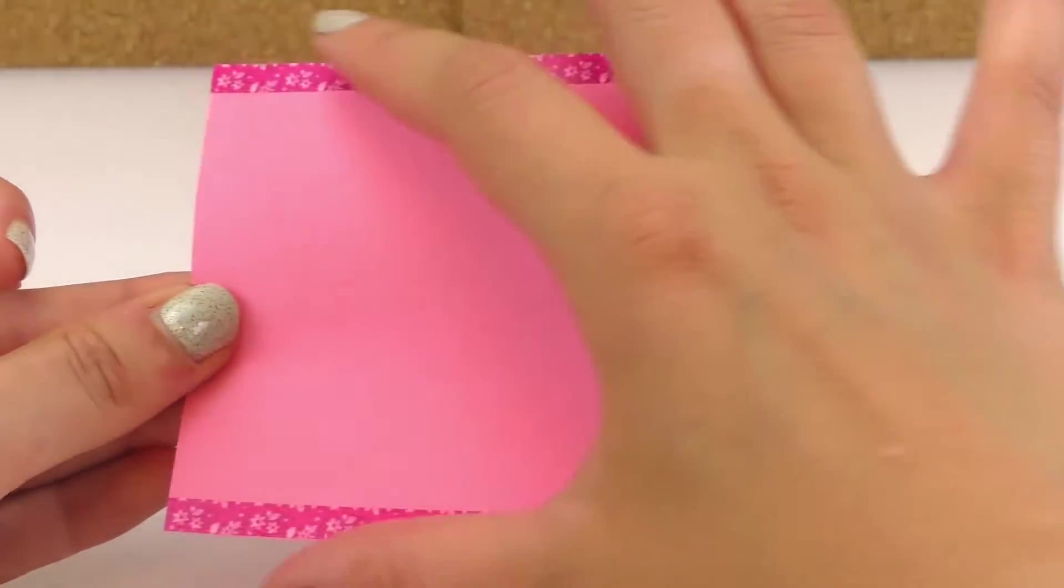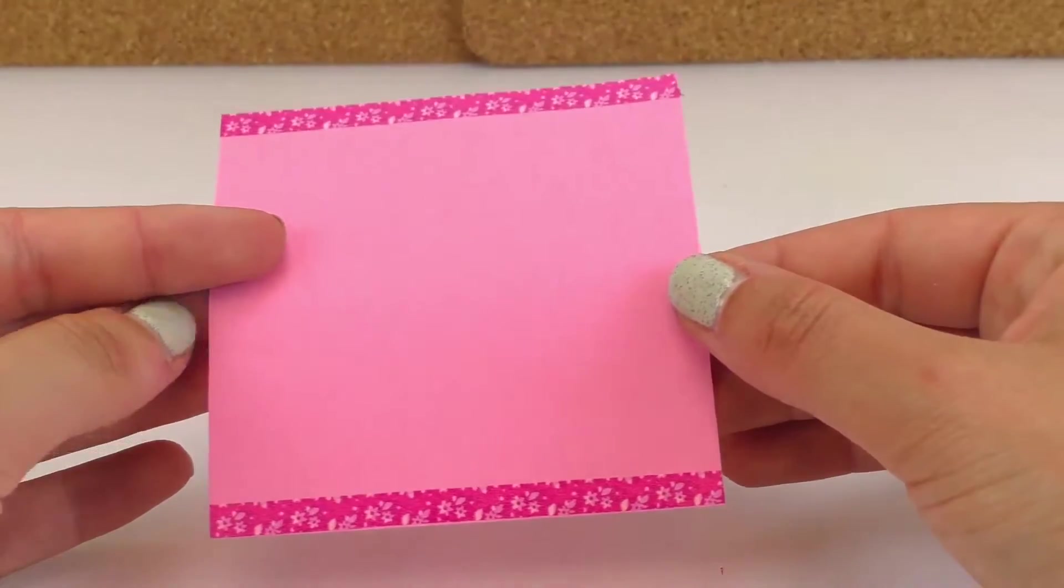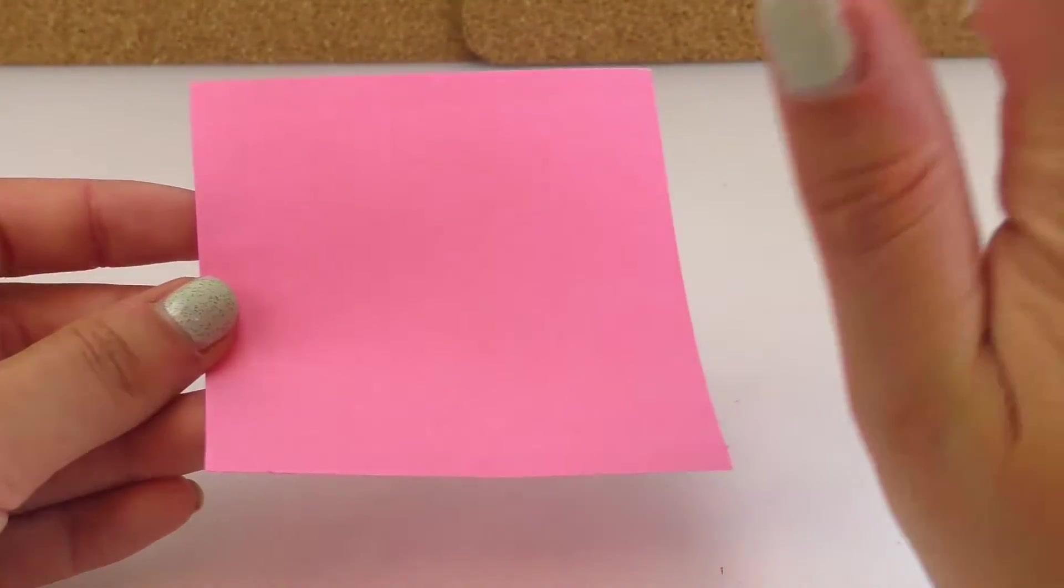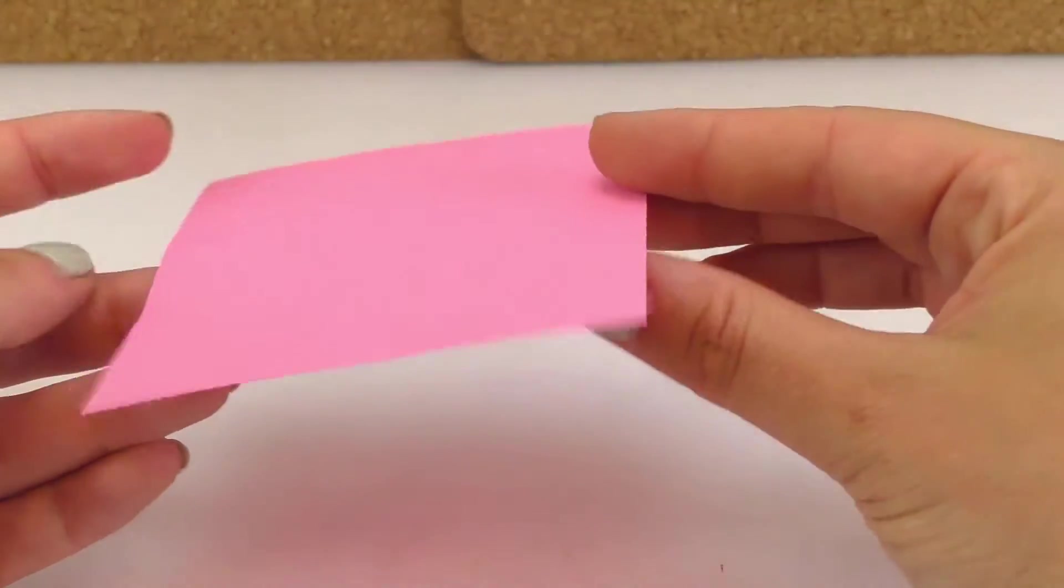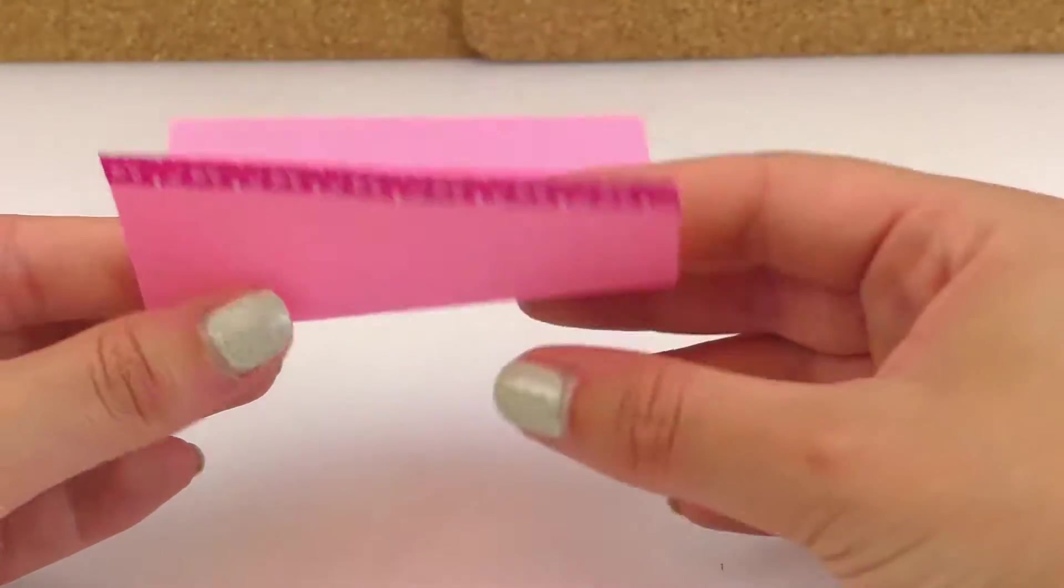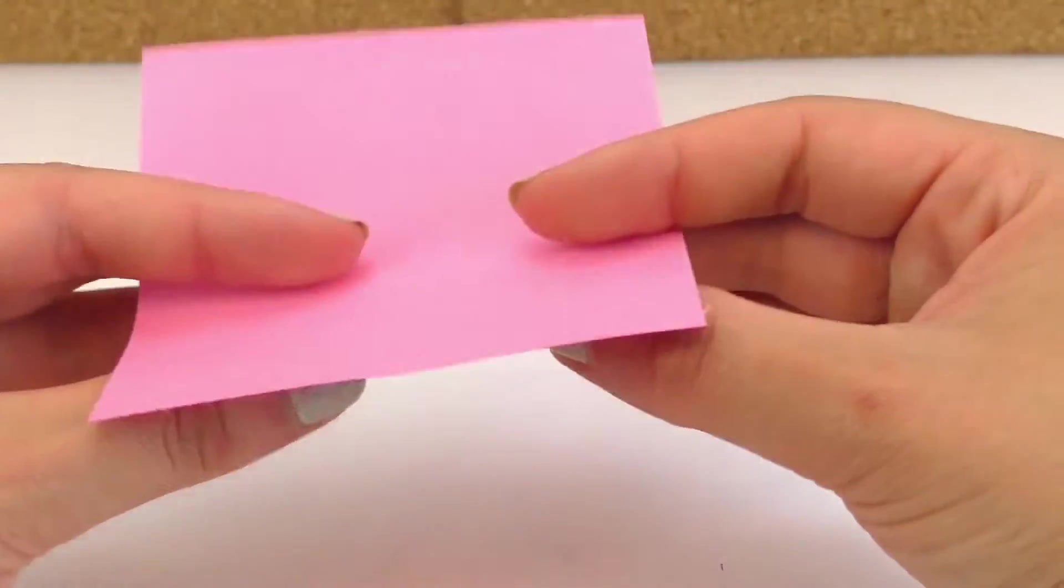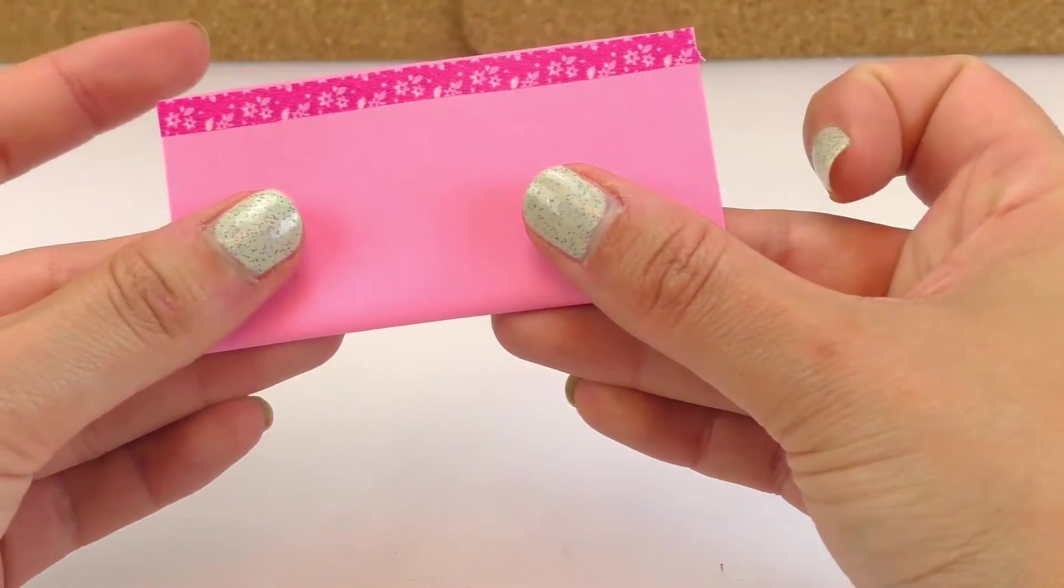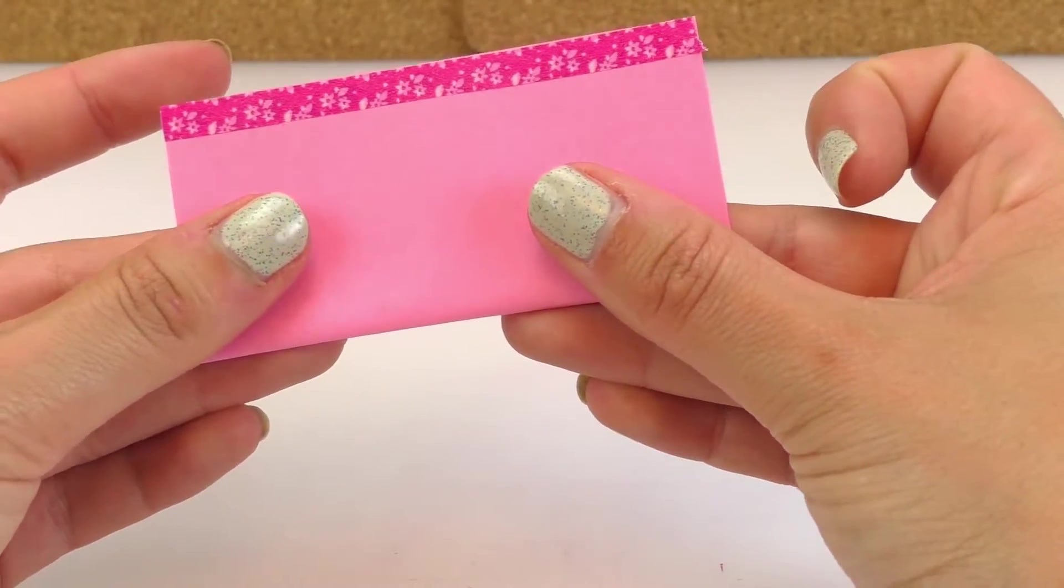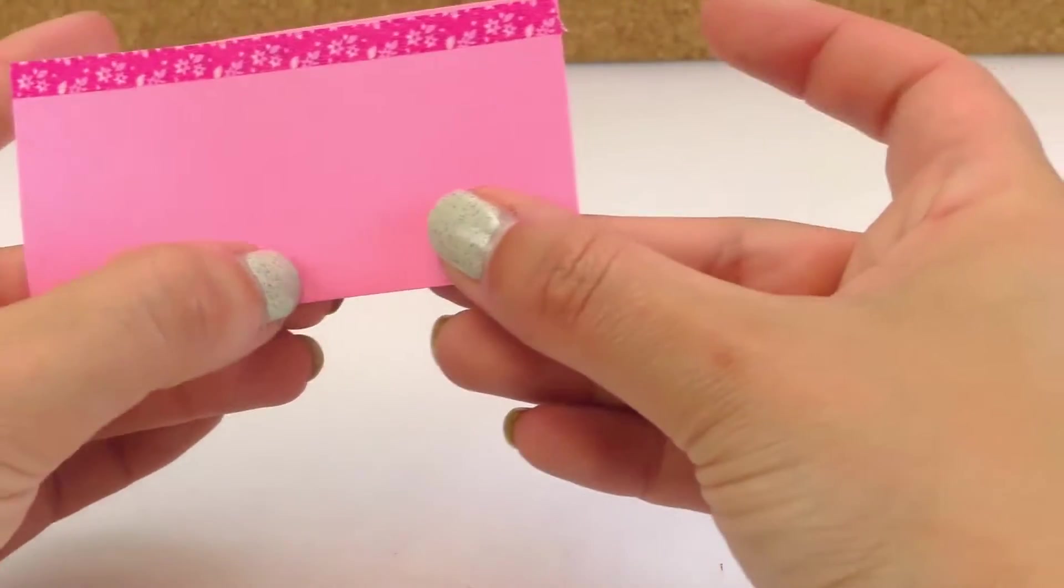We're going to grab a square piece of paper and I put some washi tape on the edges. We're going to put the washi tape facing down and fold the paper in half, just like this. The edges are touching each other and the washi tape is visible.